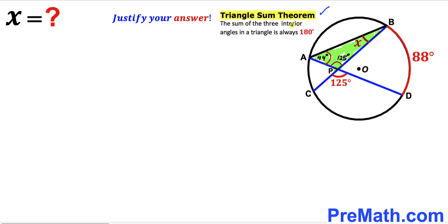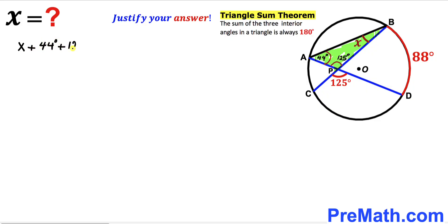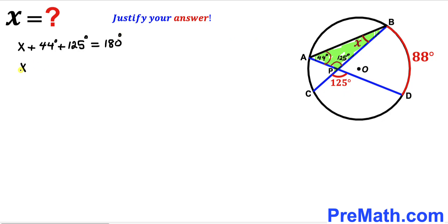This angle at the circumference, together with the other angles in the triangle, must be equal to 180 degrees. So I can write: angle x plus 44 degrees plus 125 degrees equals 180 degrees. Combining like terms gives x plus 169 degrees equals 180 degrees. Now we subtract 169 degrees from both sides.